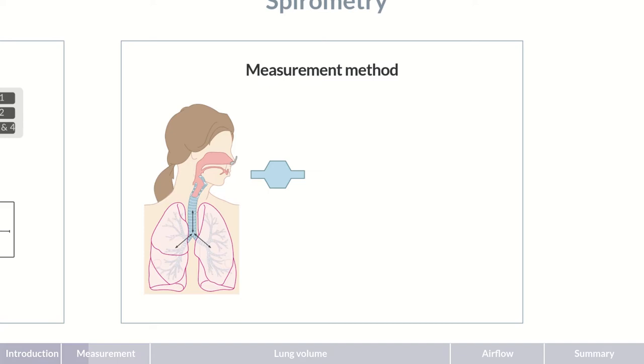Two parameters are of particular relevance. Tidal volume, which is the volume of air that is inhaled and exhaled in a single breath, and airflow.